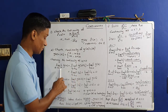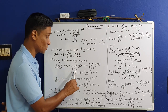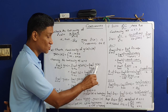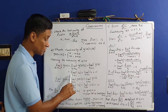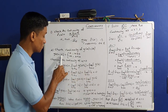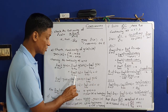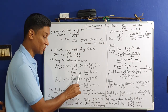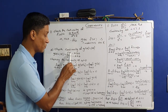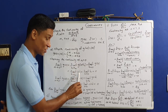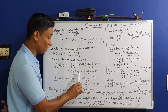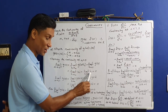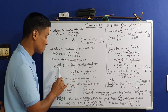So limit x→0⁺ of g(x) = limit h→0 of g(0+h) = limit h→0 of g(h) = limit h→0 of |h|. Since h is positive as h→0⁺, |h| = h, so limit h→0 of h = 0. Therefore the right limit is 0.